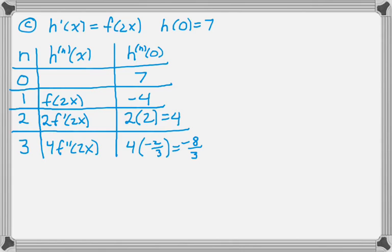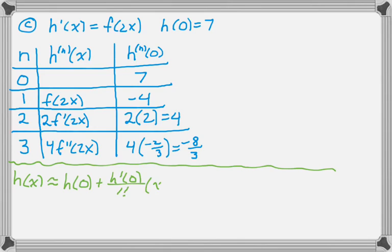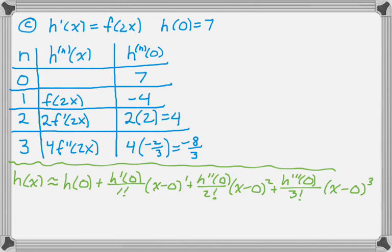And now I'm going to use the formula again, so I know that the third degree polynomial for h(x) is h(0) + h'(0)/1! (x - 0)^1 + h''(0)/2! (x - 0)^2 + h'''(0)/3! (x - 0)^3.